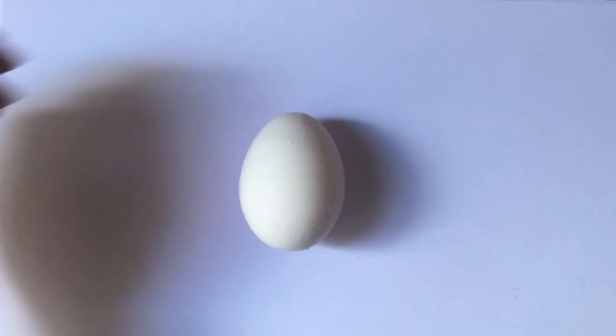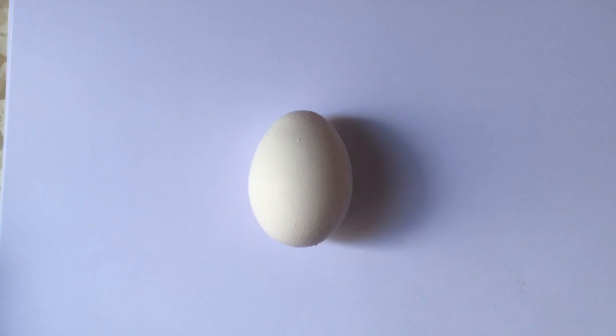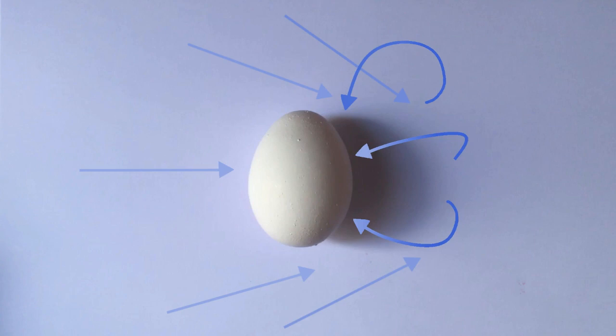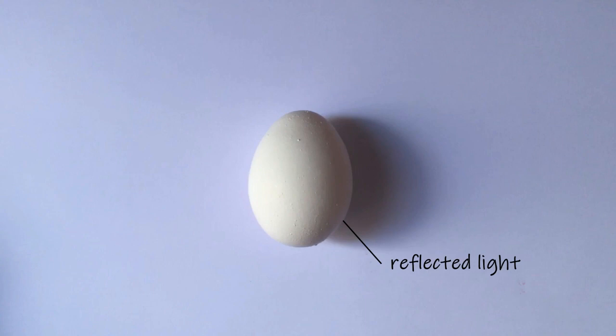This amazing phenomenon happens because light actually reflects off of things and bounces around. The light is hitting the white paper and then bouncing up onto the shadowed side of the egg, where it is reflected. That rim of light within the shadow is called reflected light. Amazing!